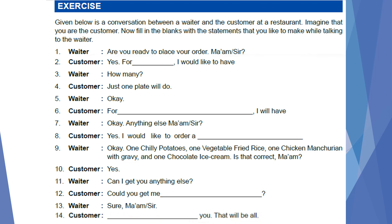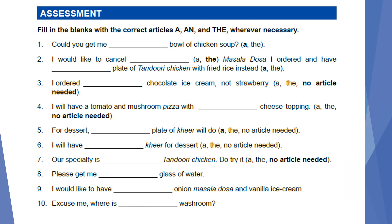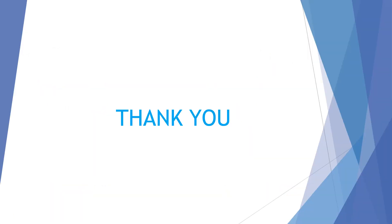Now we'll do the assessment. We have already discussed the articles above. First one: 'Could you get me a ___ bowl of chicken soup?' — the answer is 'a bowl of chicken soup.' Next: 'I would like to cancel the masala dosa' — we use 'the' because it refers to a specific or particular noun — 'and have a plate of tandoori chicken with fried rice instead.' All of you try to complete this assessment by filling in the articles. That's all for today; we will continue in the next class. Thank you.